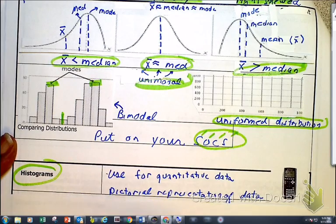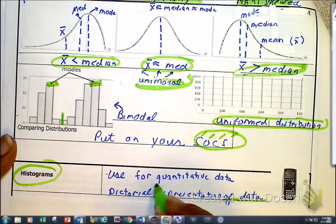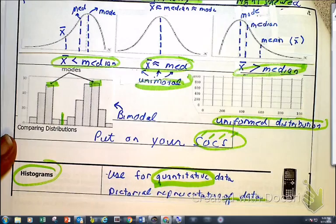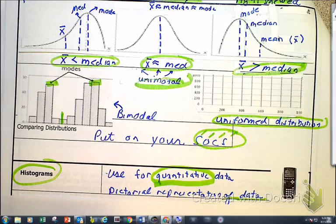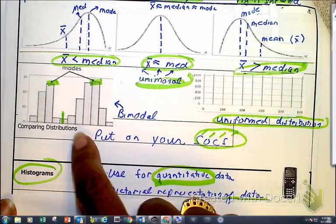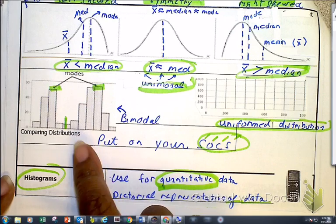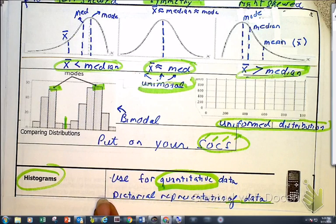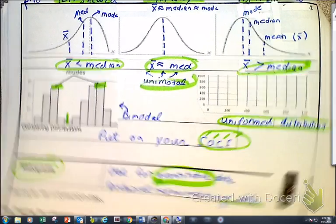Which takes us to our next premise or next ideology here, histograms. Histograms is a pictorial representation of data. And we use that, and this is the key here, we use a histogram for quantitative data and quantitative data only. So the one thing about a histogram, a histogram looks like this that I have right here. So it looks like a bar graph, but a histogram connects. A bar graph does not.